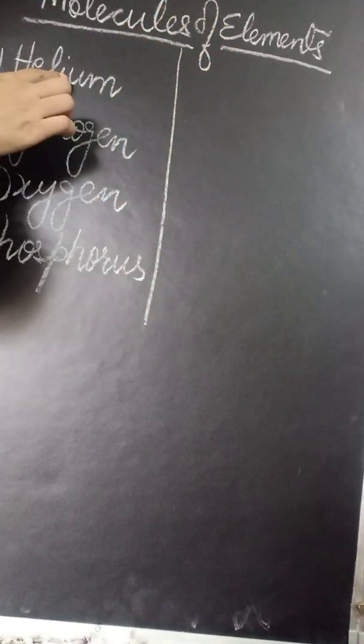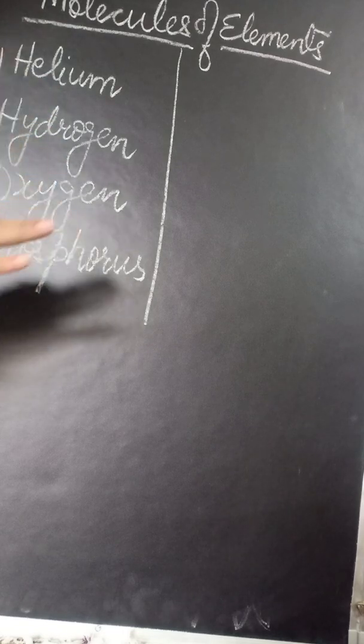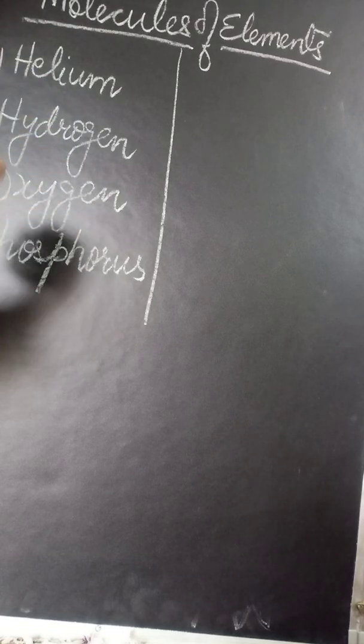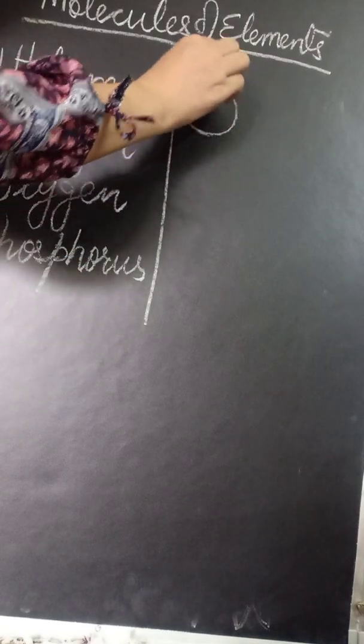What type of molecules are made of these elements? Now the first one here is helium. Helium is a noble gas. It does not combine with any other element or any other atom.